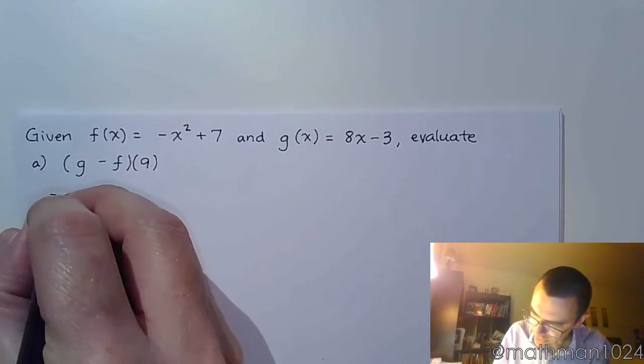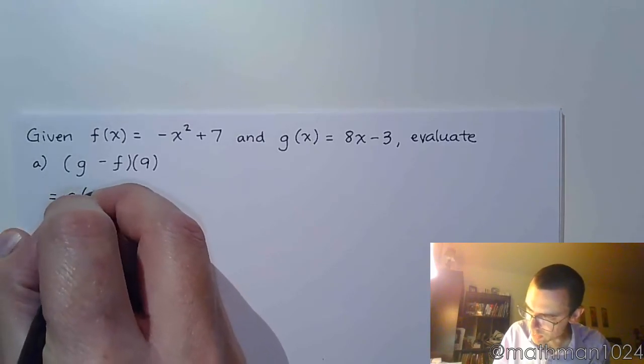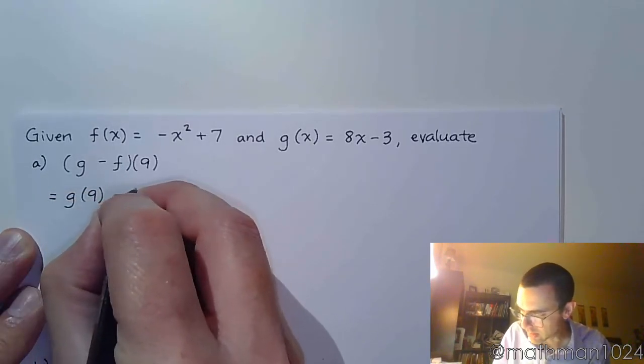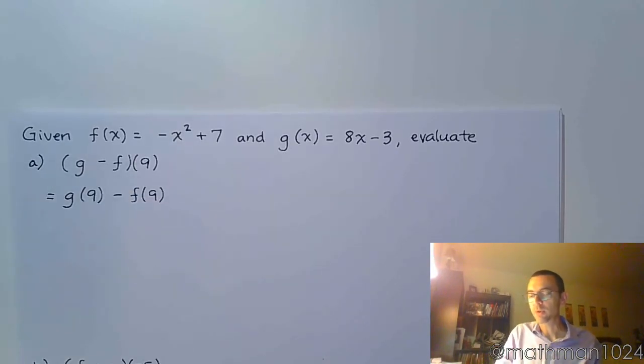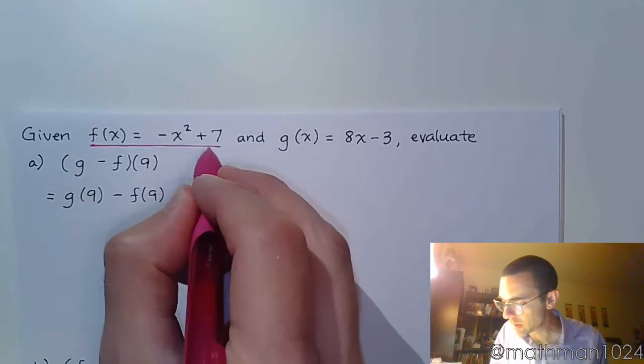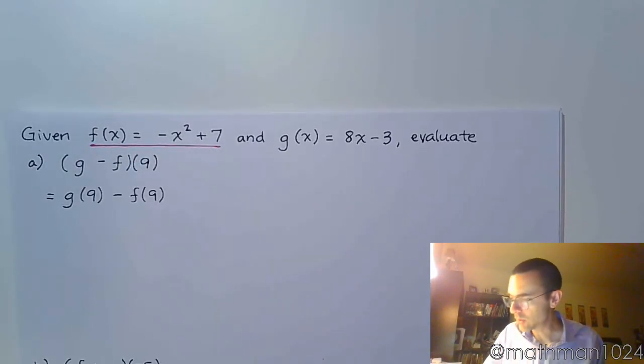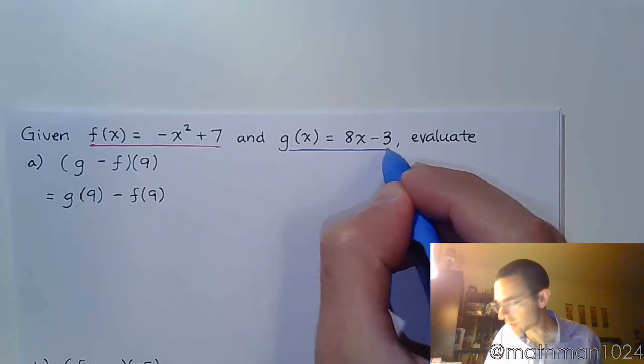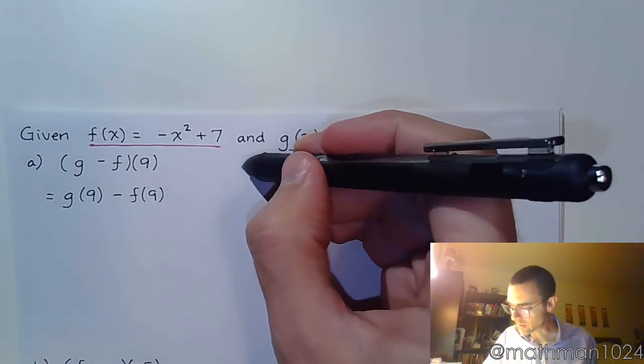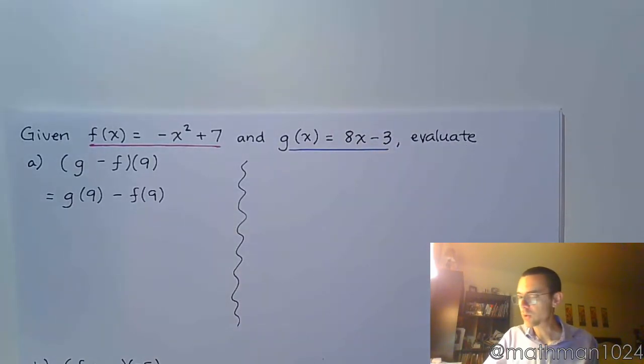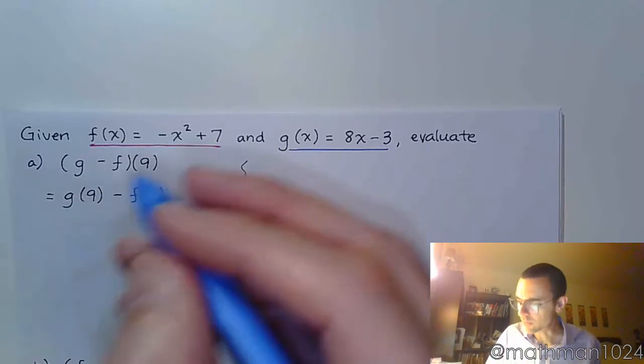The first thing we must identify and understand is that this means g of 9 minus f of 9, and order is important. Now just like we did in the previous video, I'm going to use pink for working with f, and I'm going to use blue for the stuff that I do with g. So off to the side, we're going to evaluate each of these. Now since g is written first, I'm going to go ahead and do that one first.